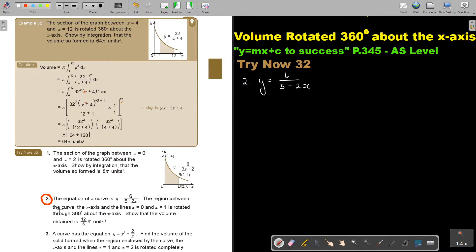The region between the curve, the x-axis and the lines x equals 0 and x equals 1 is rotated through 360 degrees about the x-axis. Show that the volume...